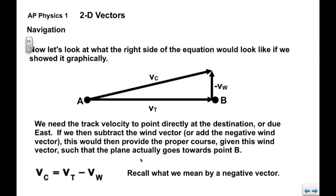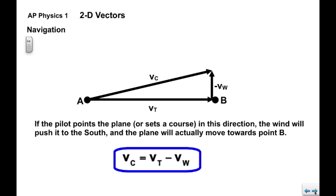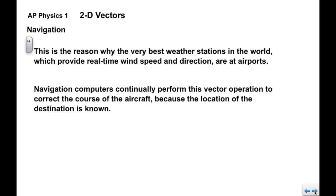So once again, recall what we mean by a negative vector. A negative vector means it's in the opposite direction. So V wind points to the south, negative V wind points to the north. Now this relationship is circled in blue because you will not see it on your formula sheet. So this is something you want to remember.